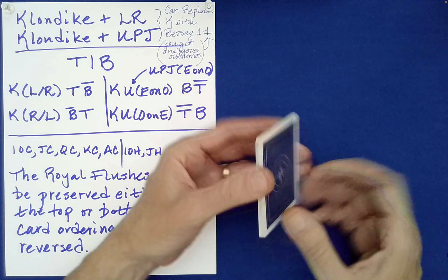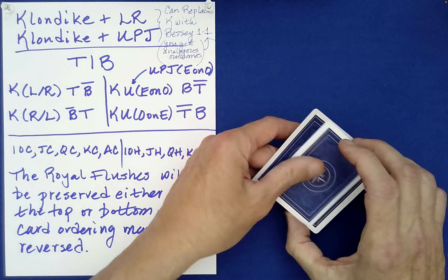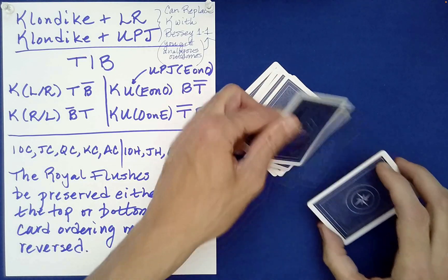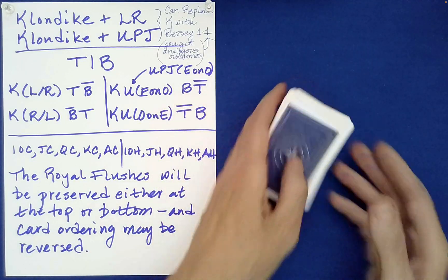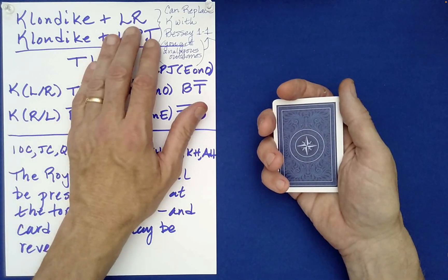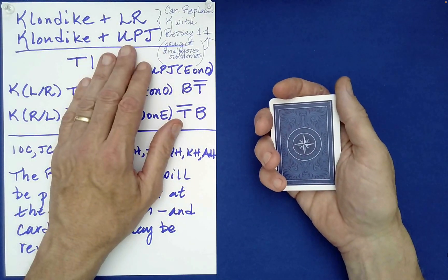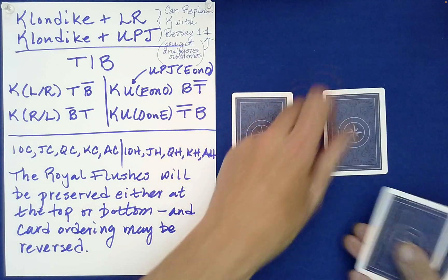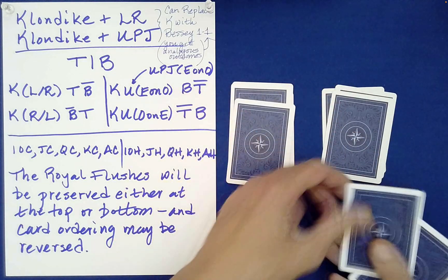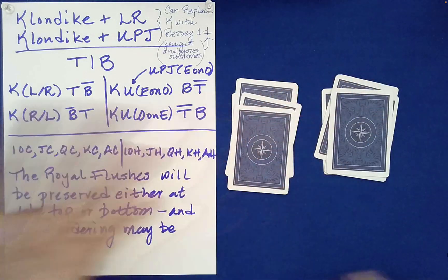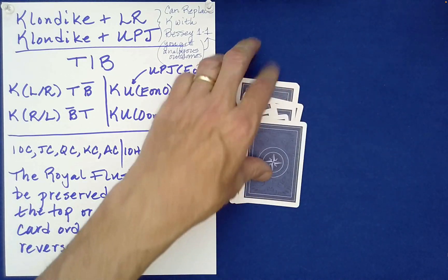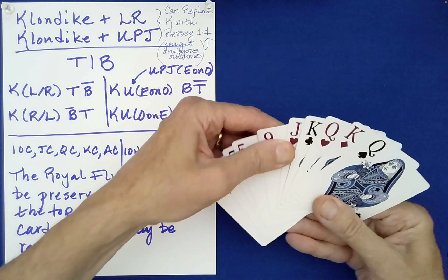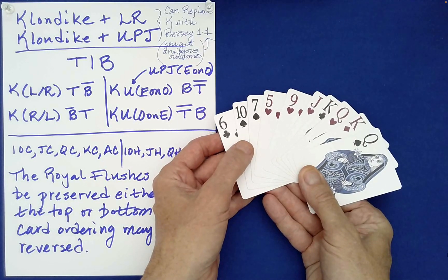For example, if you perform a Klondike shuffle — this is where you just take the top and bottom cards off as one — set those down, and then follow it with a left-right shuffle, an up-jog, or even a rod, you're going to preserve those blocks. So let's just do a left-right, and the spectator can decide how to stack these — left on right, or right on left. As you can check, we've preserved those two separate blocks of cards within this packet.